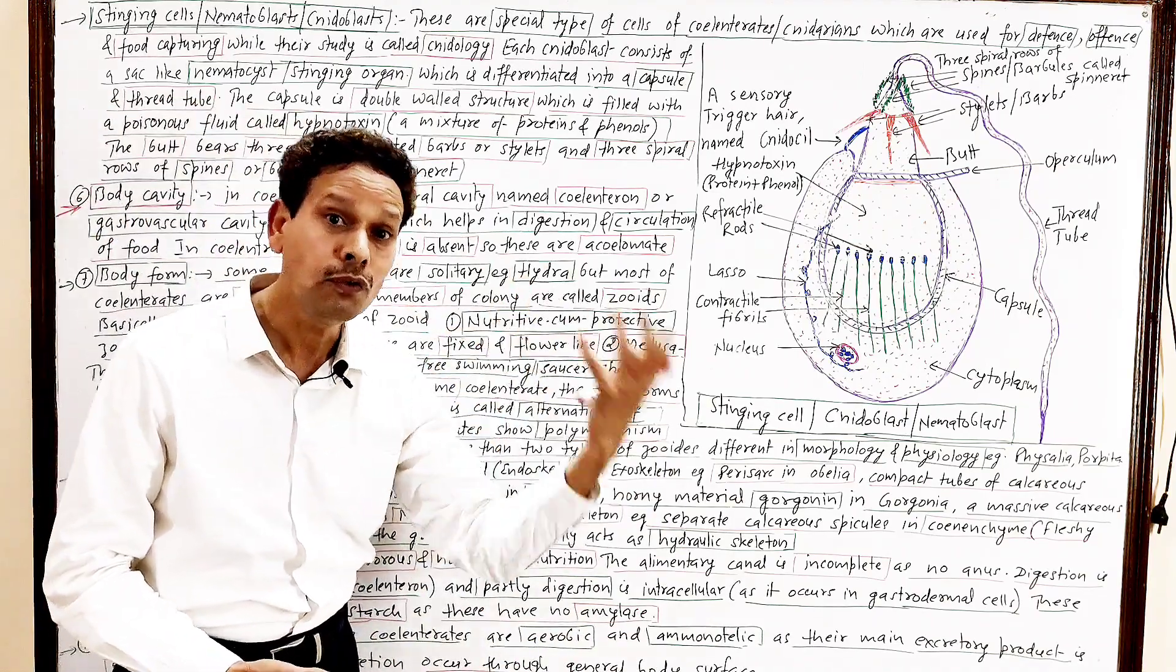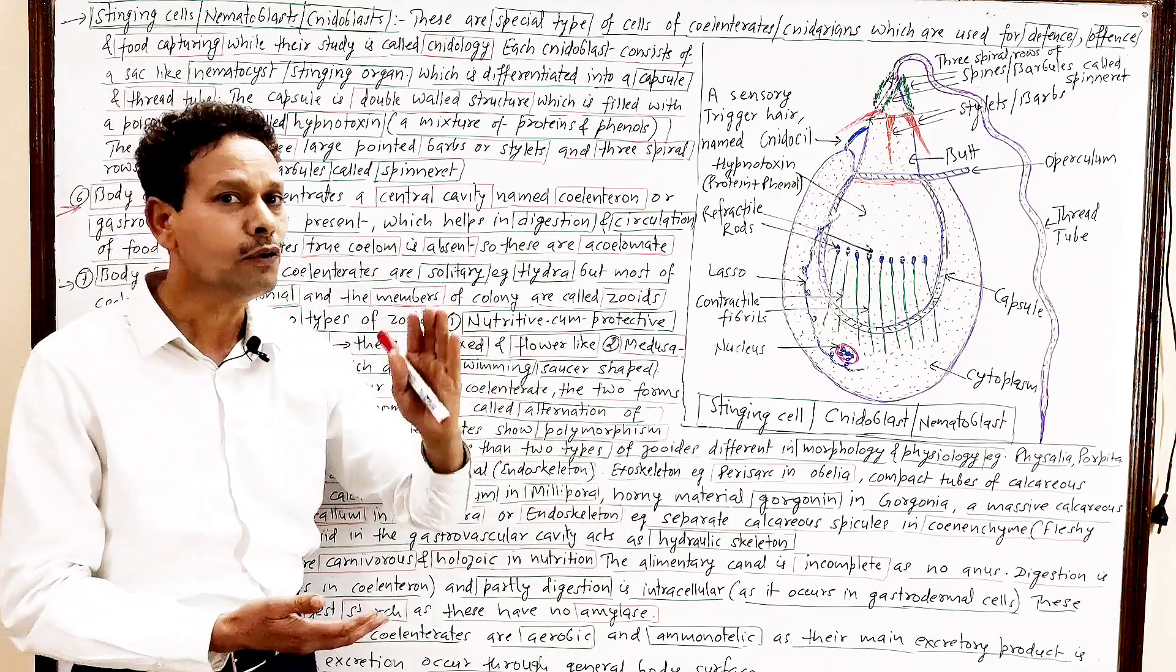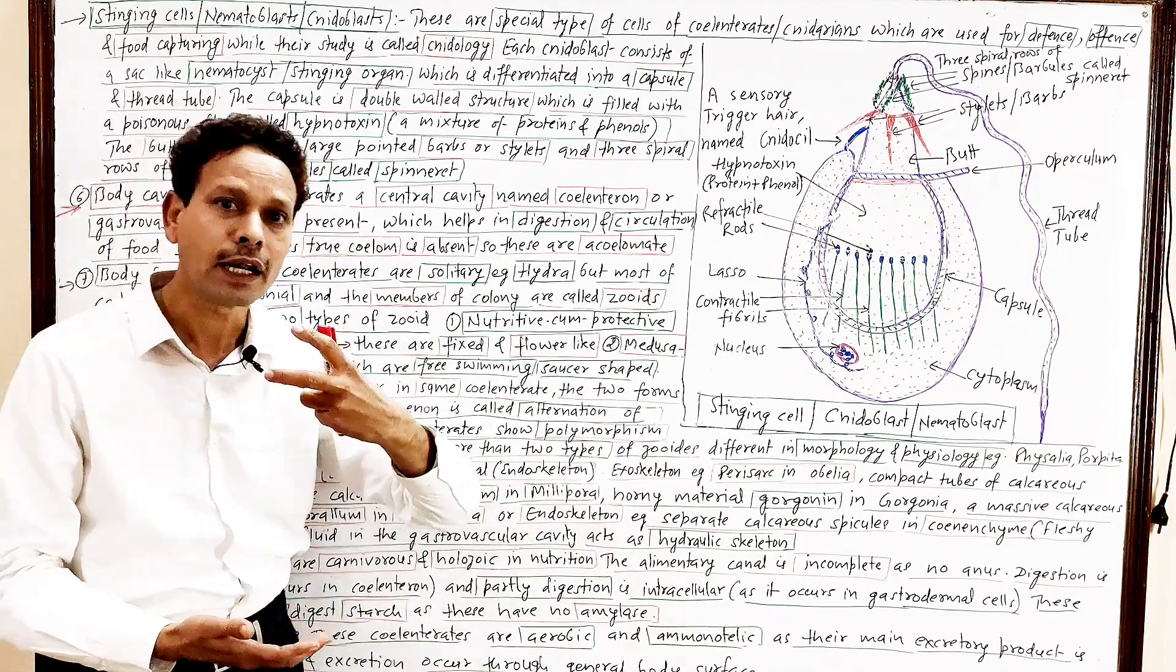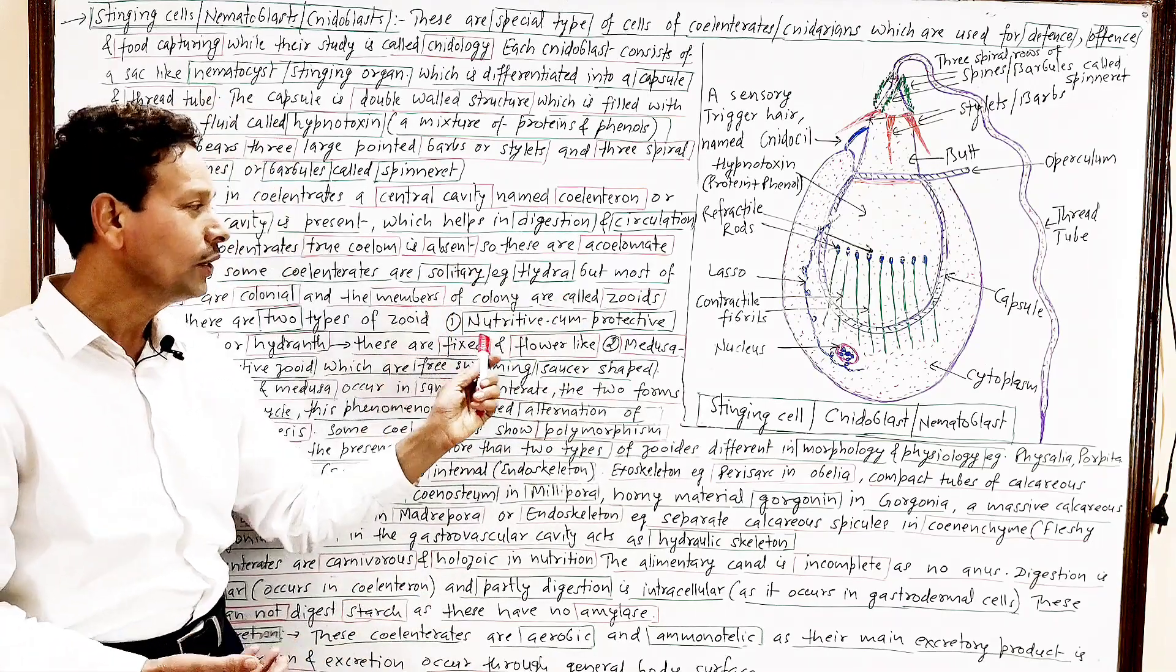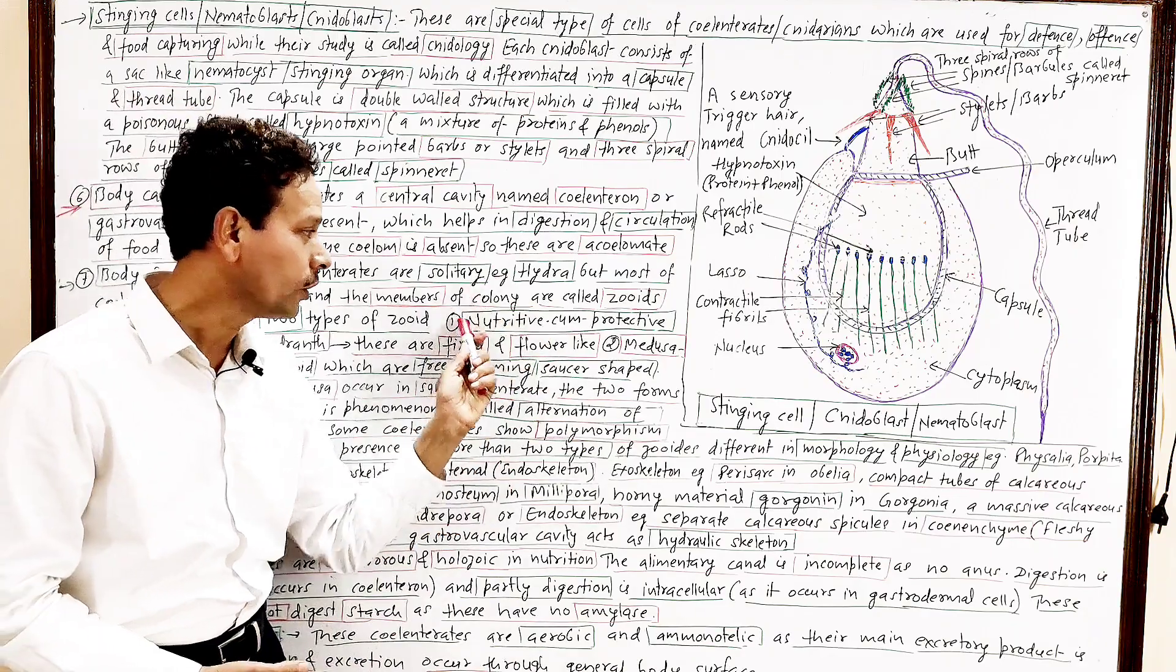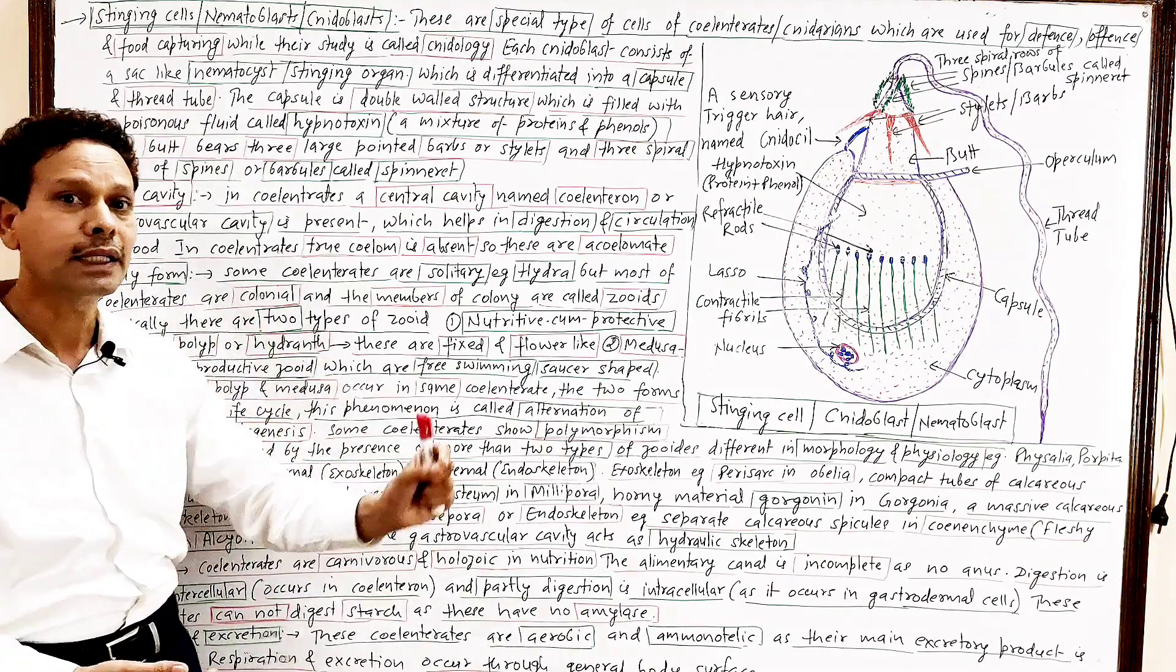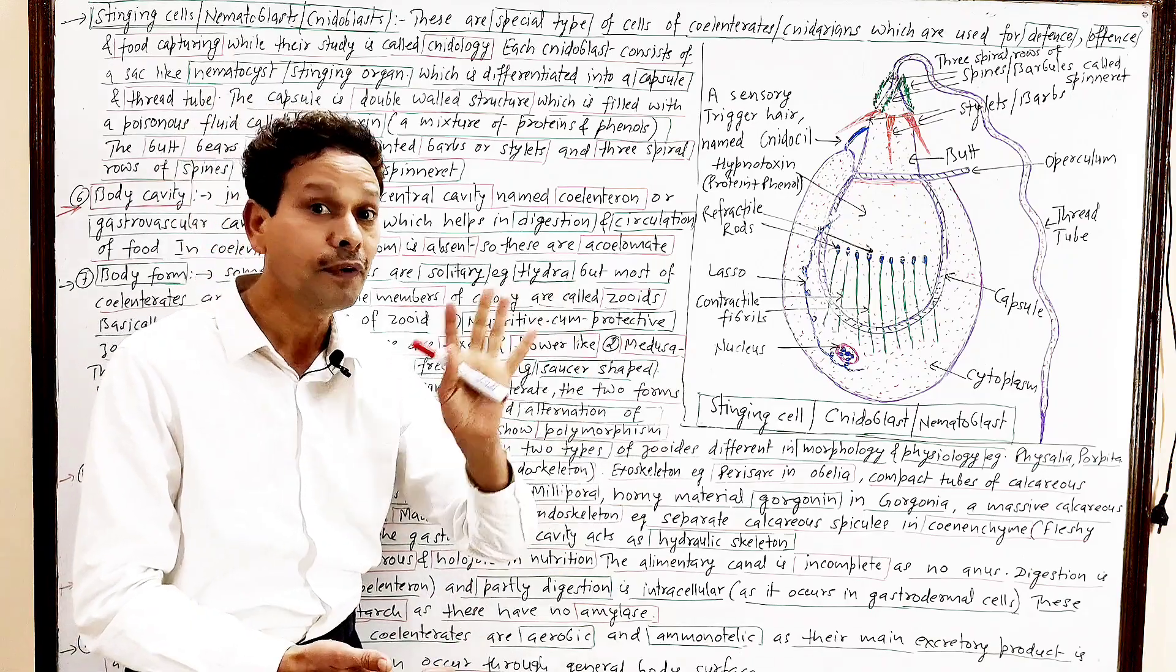Generally, in case of coelenterates, two forms are common. Each colony having generally two members. These are named zooids. One is nutritive cum protective zooid, and that nutritive cum protective zooid is polyp or hydranth. And this polyp or hydranth, it is sedentary, it is fixed, and it is flower-like.